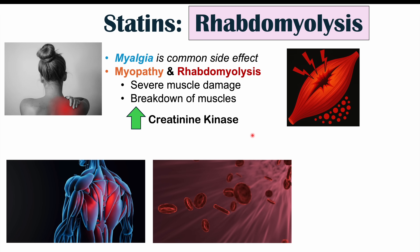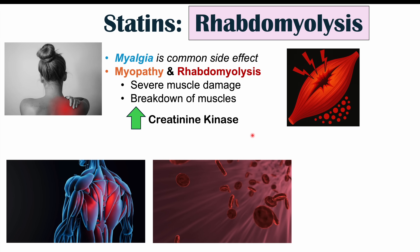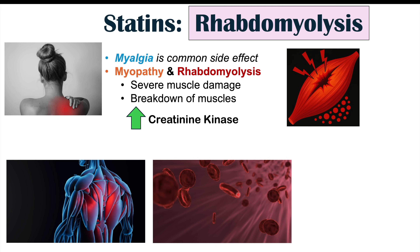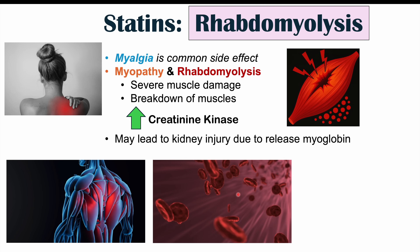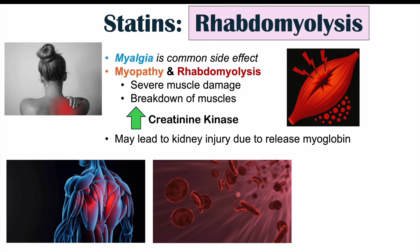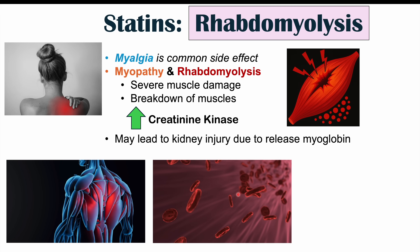Myoglobin is the analog of hemoglobin that is inside the muscle. It's not supposed to be outside of the muscle. If it does get outside, it'll enter the blood and travel to the kidneys, where it can lead to kidney injury or damage. So rhabdomyolysis — severe muscle damage or destruction — leads to release of myoglobin, which can then lead to kidney injury.